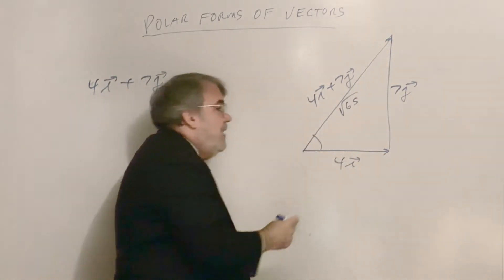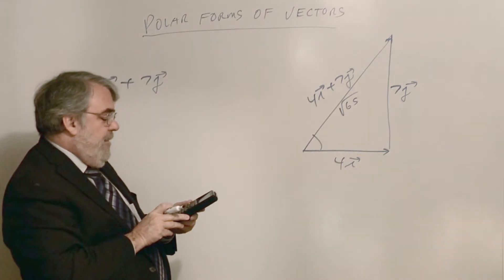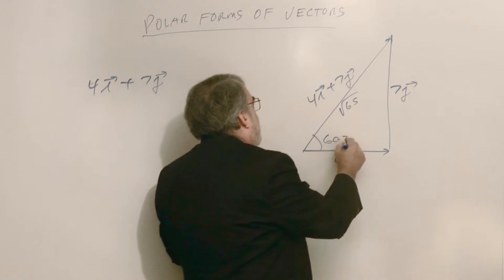And our angle, inverse tangent, 7 divided by 4, is about 60.3 degrees. 60.3 degrees.